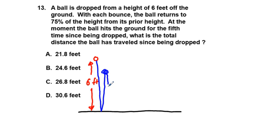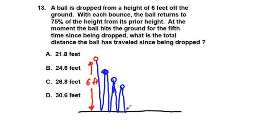The ball comes down again and bounces for a second time, returning to 75% of its most recent prior height. Then the ball bounces again, touches the ground for the third time, and bounces to 75% of its previous height. It then touches the ground the fourth time, bounces to 75% of its most recent height, and touches the ground one last time — the fifth touch. The ball keeps bouncing but we're only interested in the distance covered up to these five touches.